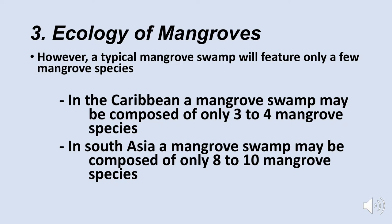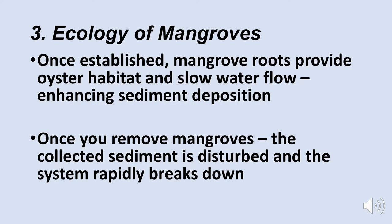A mangrove tree takes root naturally in a shallow area off the coast. Once established, these mangrove roots provide oyster habitat, slow water flow, and enhance sediment deposition. If you remove the mangroves, the collected sediment is disturbed, churned around, and ends up in the ocean — which is not a good thing — and the system will rapidly break down.